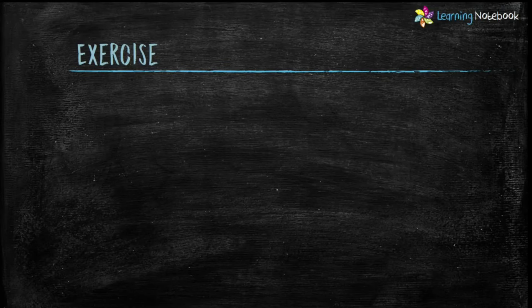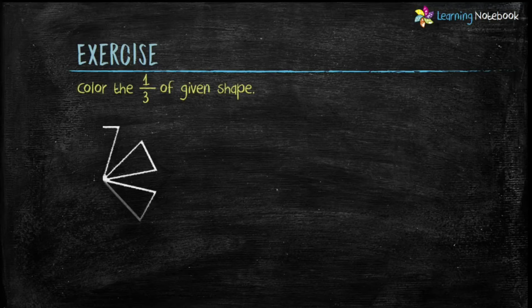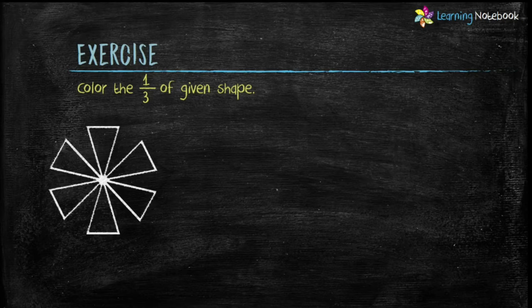Question 2 is: color one-third of the given shape. Look at the first figure. This shape has 6 parts, and we have to color one-third of this figure. So divide 6 by 3. We get 2.